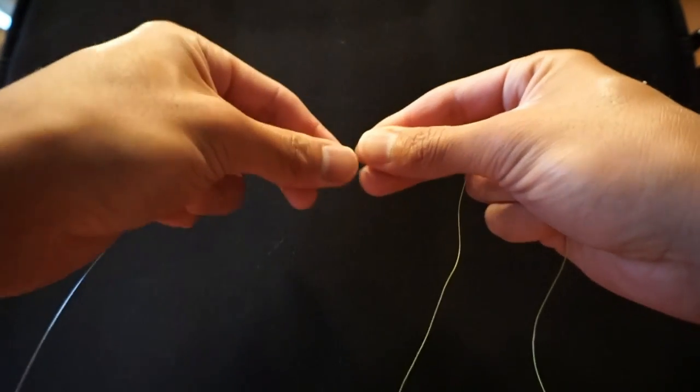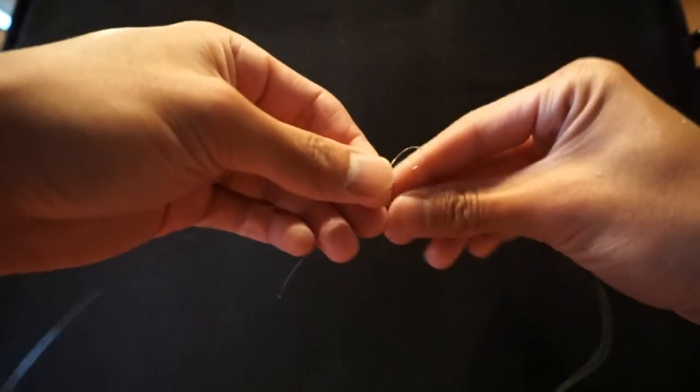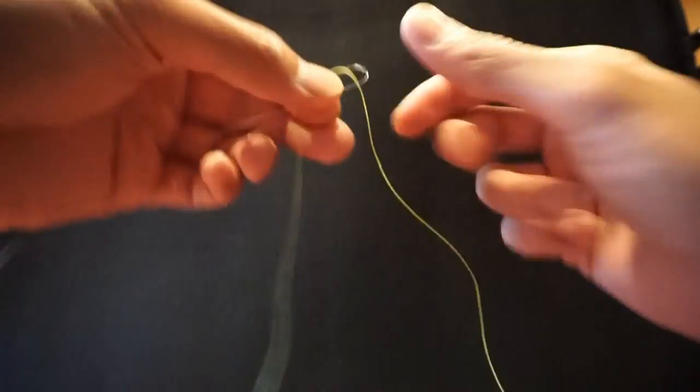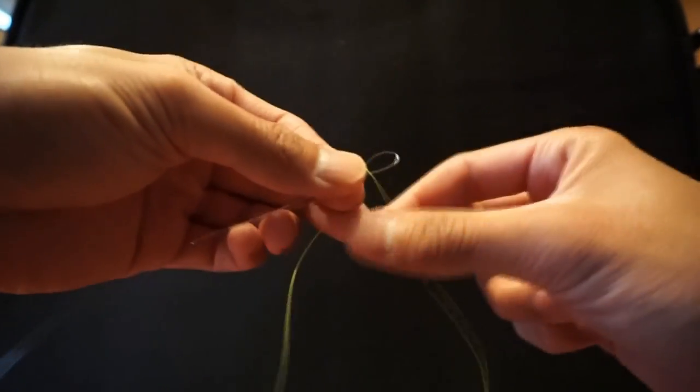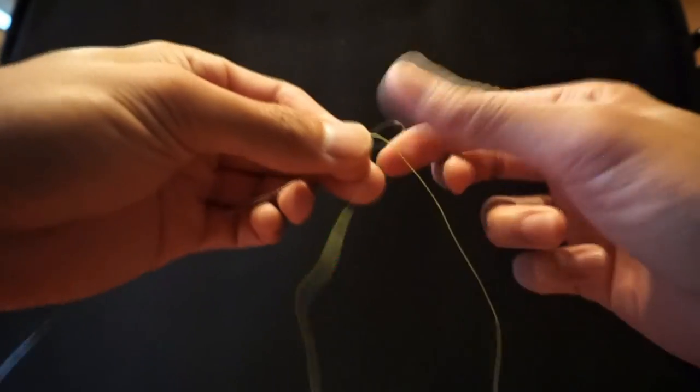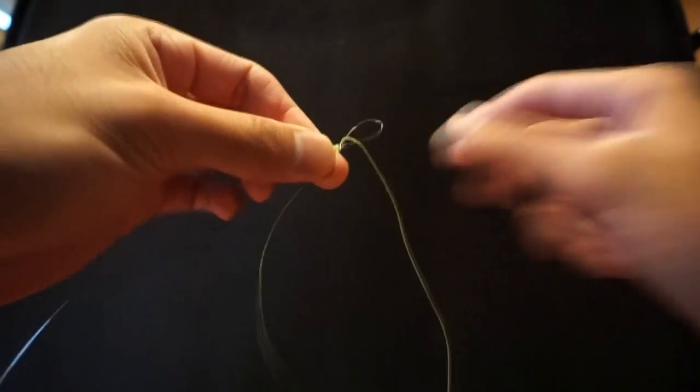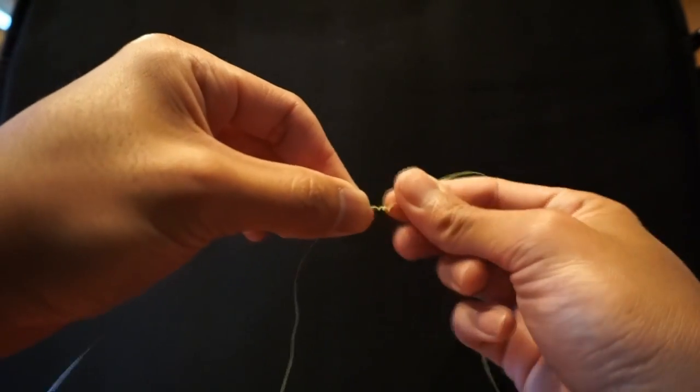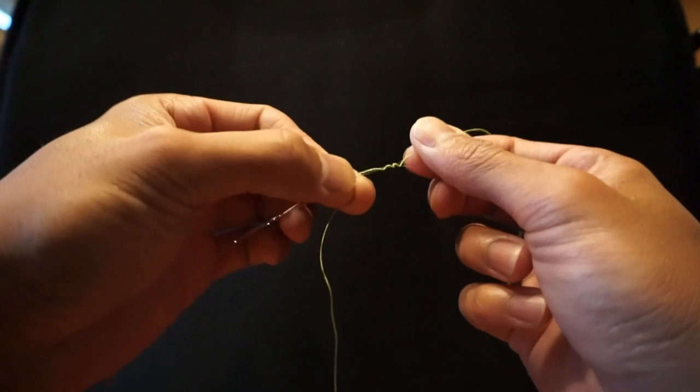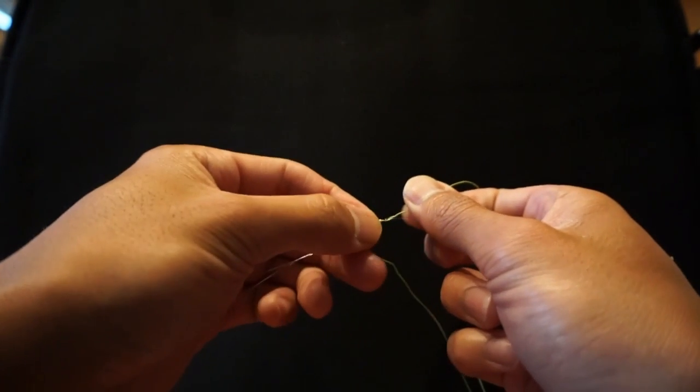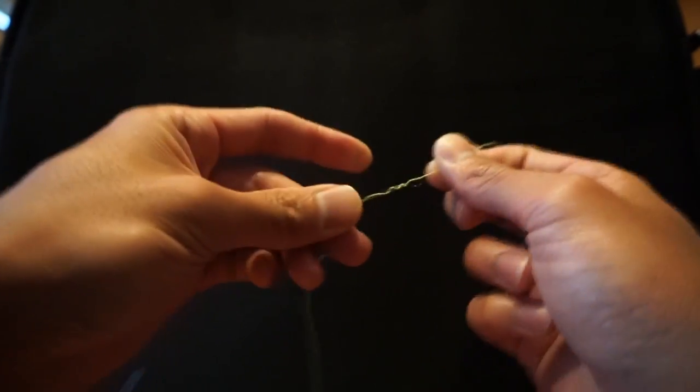Grab the leader, make that loop, come in through the bottom, pull it through, wrap it around four times. That's one, two, three, and four. Grab the main line, straighten everything out. And there's a slight kink in there, let's see if I can work that out with my hand. Nope. Let's restart. So if you mess up, just restart.